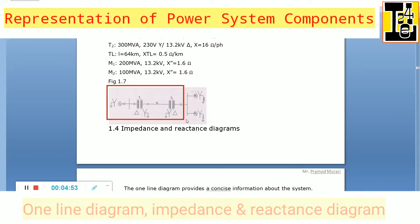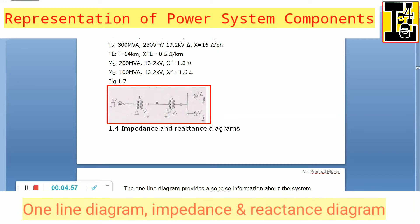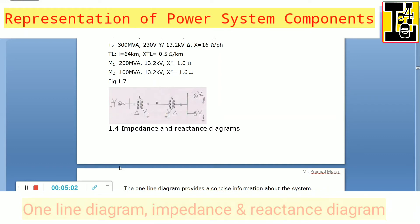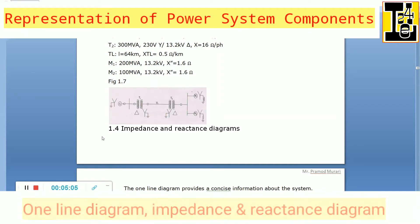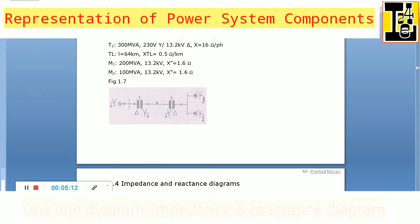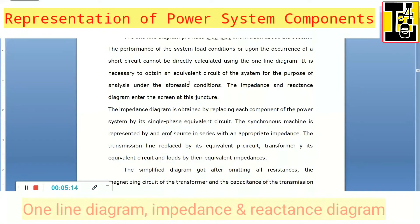This is how the one line diagram is symbolically represented. It gives precise and concise information of the power system. Let us now go through the impedance and reactance diagrams of a power system.